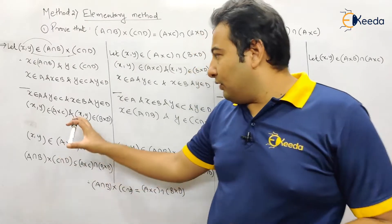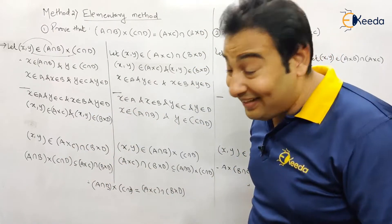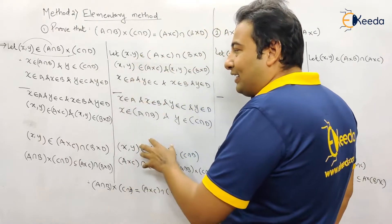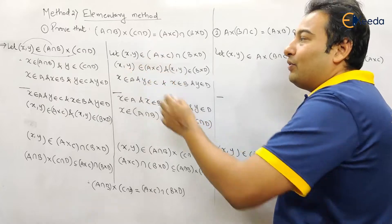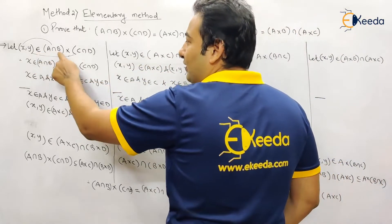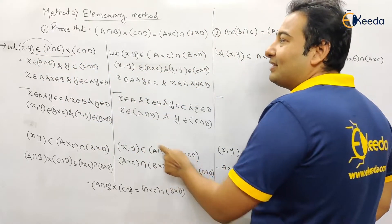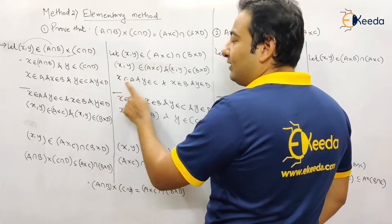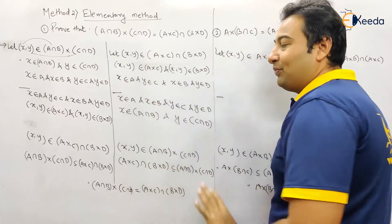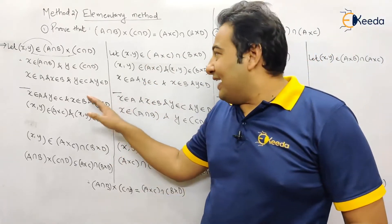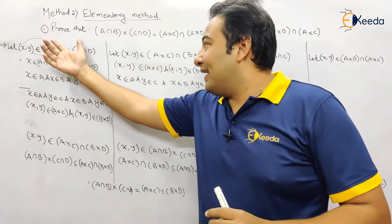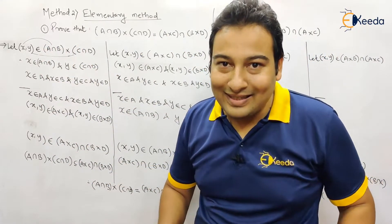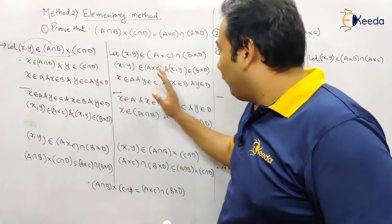Here is another trick: if you observe the second part, you can simply write down the first part in reverse order and you will get it. See — this line is here, the next line is here, and so on in reverse. So while writing the second part, no need to think hard — you can simply write the first part in reverse order and you will get your solution. We're going to follow this in the next example.